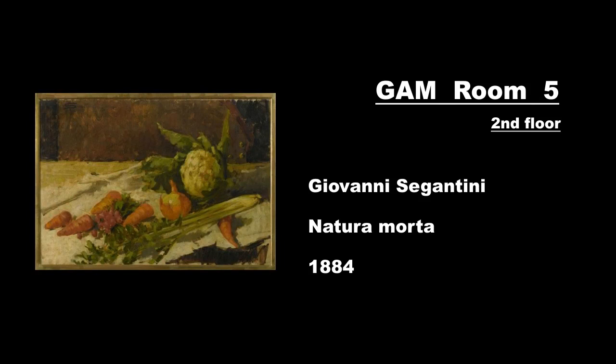Giovanni Segantini, Still Life, 1884. The painter Segantini went through various stylistic phases in his artistic career and chose very different subjects. His most famous works are linked to plain air painting and to the images of pastures and mountains to which he was particularly tied.